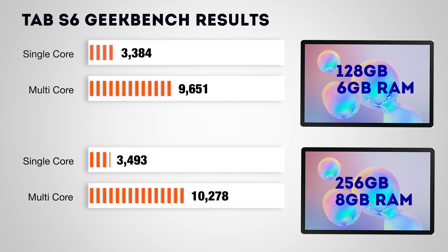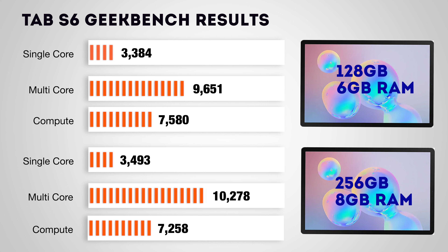Here we put both devices to the test and ran Geekbench for single core, multi-core, and compute several times. As expected, the results are very, very similar. However, we did notice that the 8 gigabyte version came out slightly higher every single time — the numbers are not mind-blowing compared to other devices out there. When comparing compute, we noticed that the 8 gigabyte version comes out slightly lower. Nevertheless, it is really close and should not make a single difference.